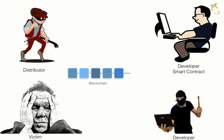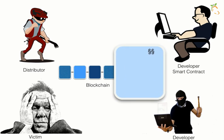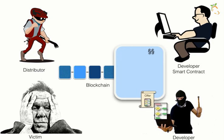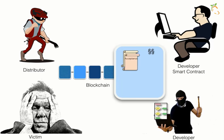The smart contract sits on a blockchain. This person creates a smart contract where the ransomware developer puts an offer to develop a ransomware. The distributor then accepts this offer and puts the acceptance on the blockchain.